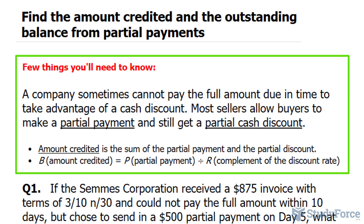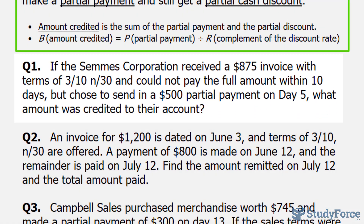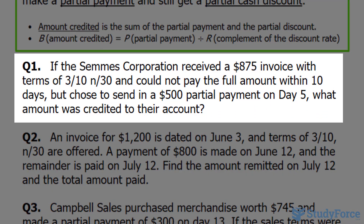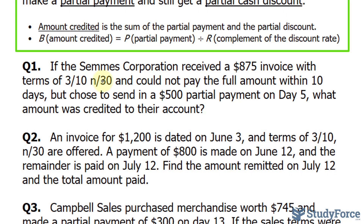The first of three questions reads: if the CEMS Corporation received an $875 invoice with terms of 3/10 and N/30 — meaning 3% discount if you pay within 10 days, or the net price within 30 days; after 30 days you might have to pay interest or penalties — and the corporation could not pay the full amount within 10 days but chose to send a $500 partial payment on day 5, what amount was credited to their account?